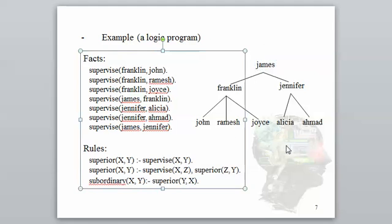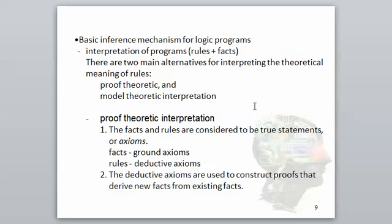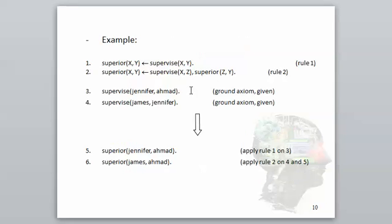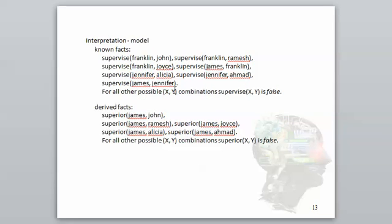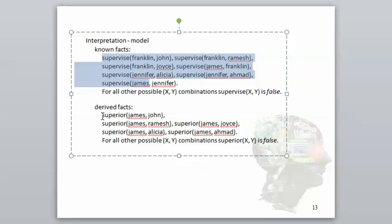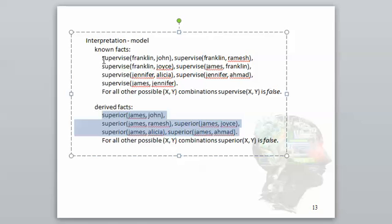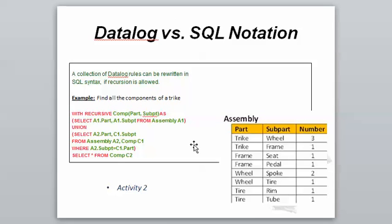The next thing to read is some examples here on logic and how the rules are being implemented. For example, we have these known facts, and then there are other facts that are being derived — like the information about James. This information is not explicitly stored, so this is what is explicit, and the derived information is what is implicit.